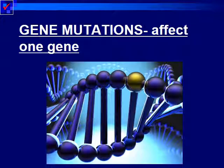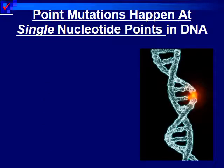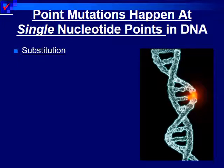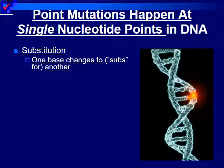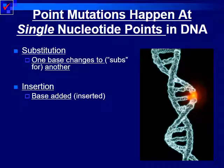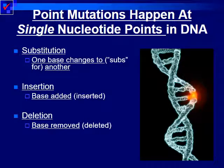The first type of mutation we're going to discuss are gene mutations. These are mutations that only affect one gene, or rather, just one base. A point mutation is a mutation that happens at a single nucleotide point in the DNA, and they have the following different effects. You could have a substitution, where one base is exchanged for another — for example, we originally had an A and now it's a C. We could have an insertion, where a base is added into the sequence. Or we could have a deletion, where a base is removed from the chain.